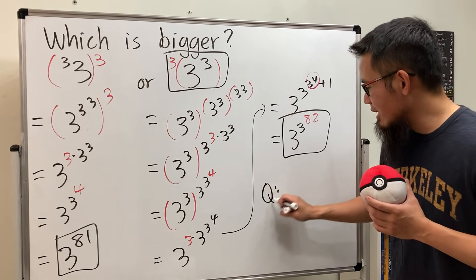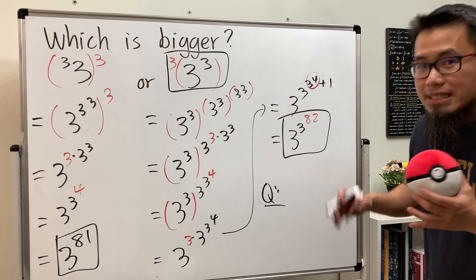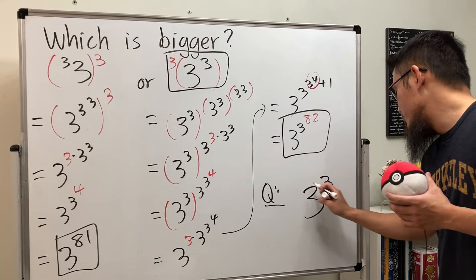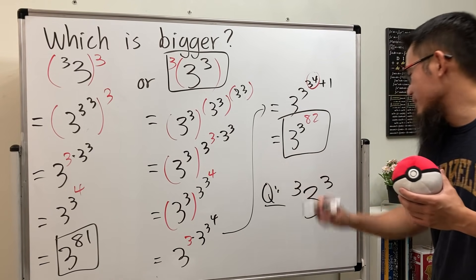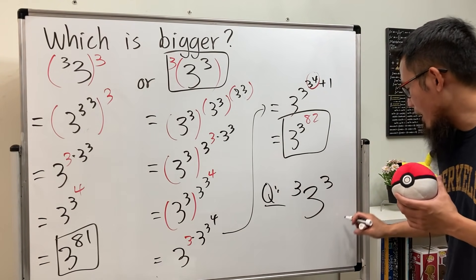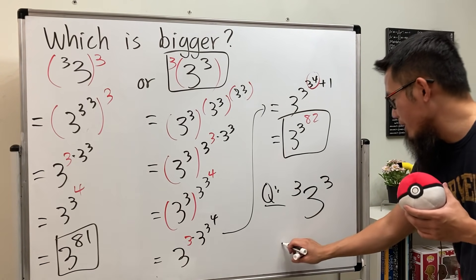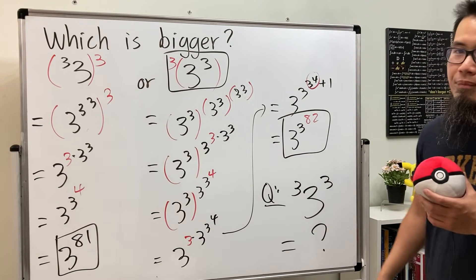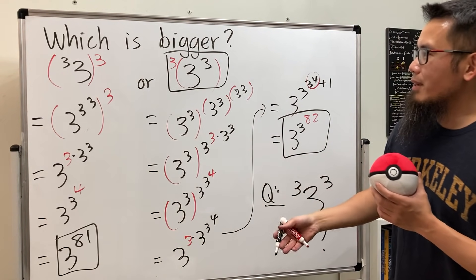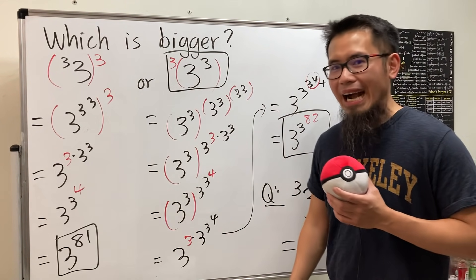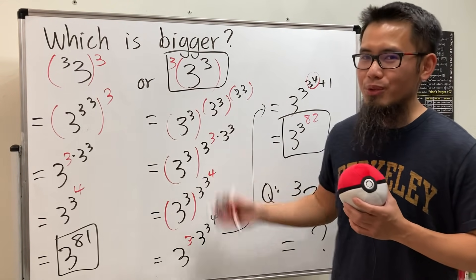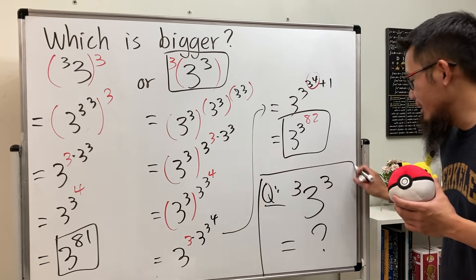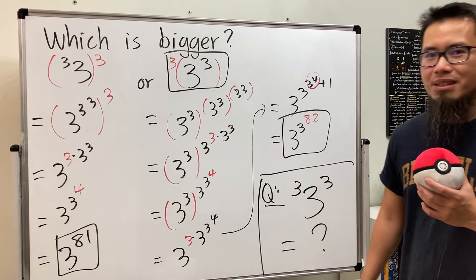Before we go, I just want to ask you: suppose somebody writes three, three, three like this — how in the world are we going to interpret this notation? Do we do it from left to right, or right to left? Which one do you think we should do? Leave the answer in the comments.